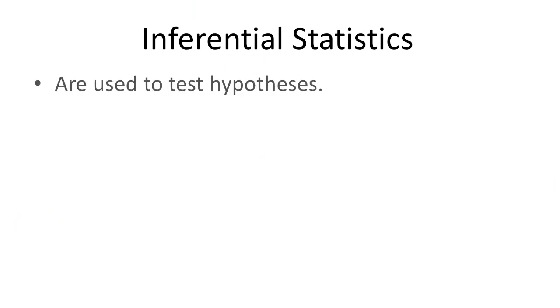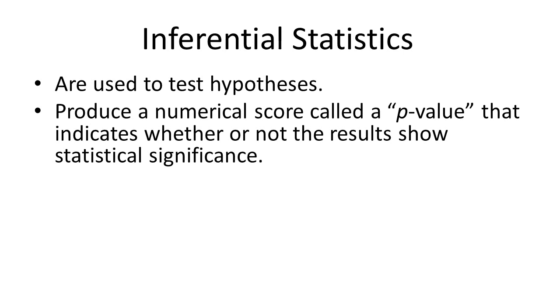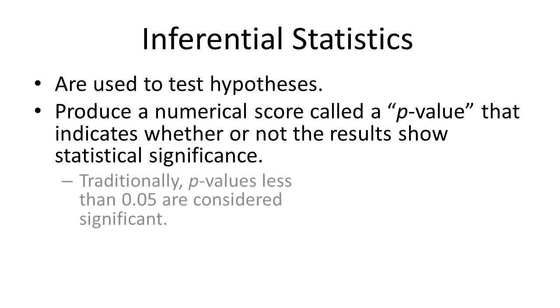The other kind of statistics — inferential statistics — we use to test hypotheses. There are many different kinds of inferential statistics, and we won't go into detail about any of them in this class. But the end result of doing any kind of inferential analysis is going to be what's called a p-value, or a significance score. Traditionally — and this isn't just psychology, this is most sciences — if you find a p-value that's less than 0.05, that means you have something interesting. If it's not less than 0.05, then your hypothesis has basically been falsified.